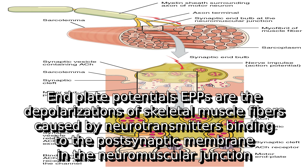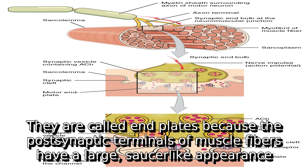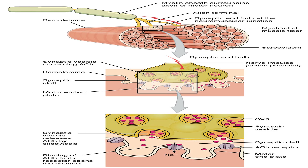Endplate potentials (EPPs) are the depolarizations of skeletal muscle fibers caused by neurotransmitters binding to the postsynaptic membrane in the neuromuscular junction. They are called endplates because the postsynaptic terminals of muscle fibers have a large saucer-like appearance.